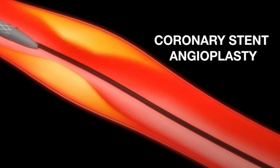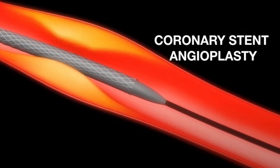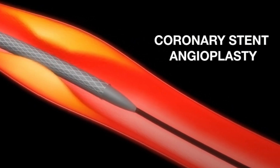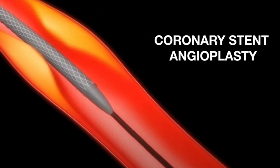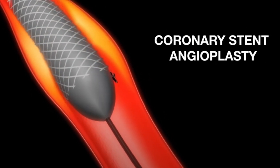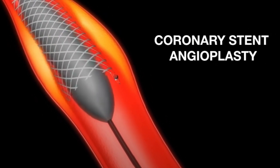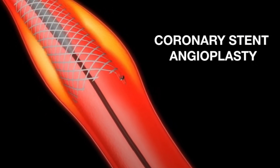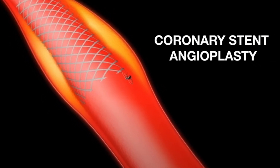A collapsed stent is placed over the deflated balloon catheter as it is inserted into position. When the balloon is inflated, the stent expands and locks itself into place. The deflated balloon and catheter are then withdrawn, leaving the stent behind to hold the artery open permanently.